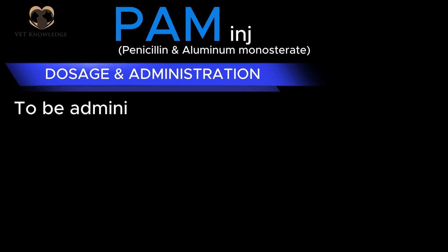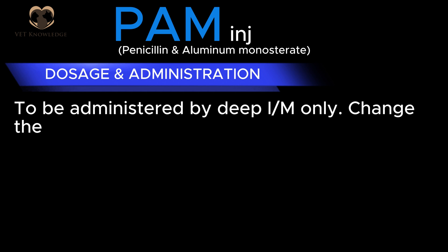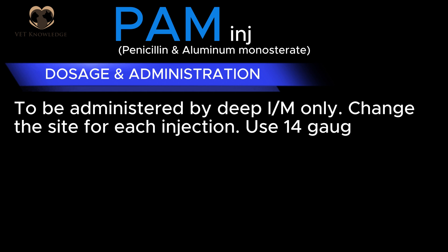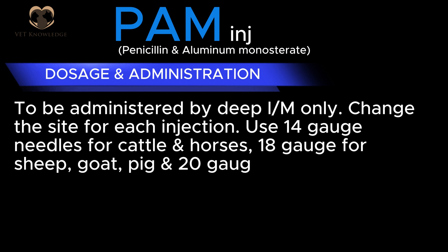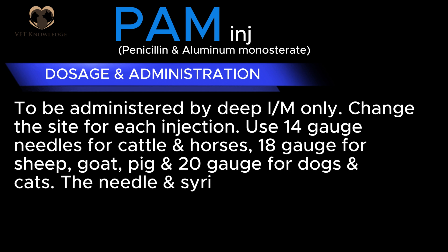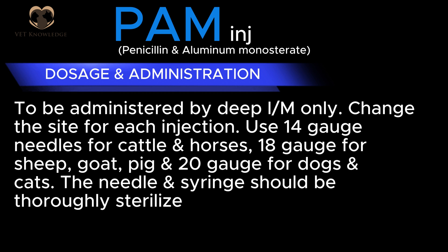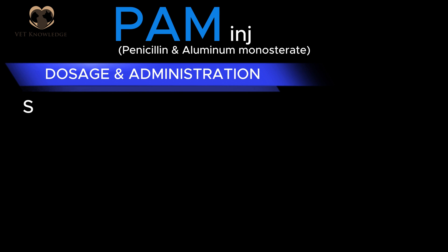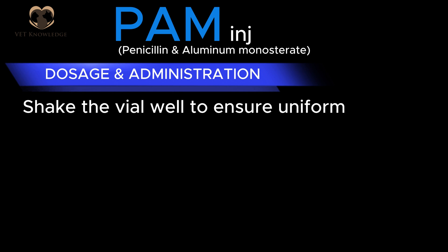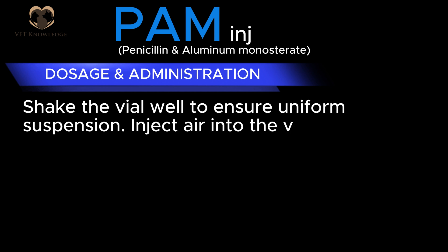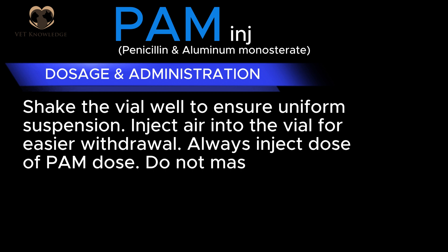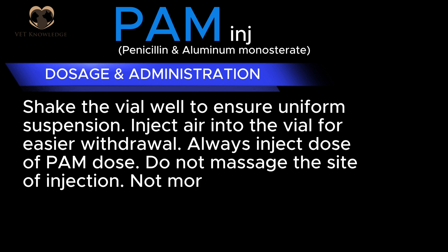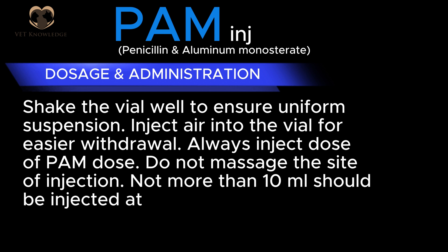PAM administration instructions: to be administered by deep IM route only. Change the injection site for each injection. Use 14-gauge needles for cattle and horses, 18-gauge for sheep, goat, and pig, and 20-gauge for dogs and cats. The needle and syringe should be thoroughly sterilized by boiling in water before use. Shake the vial well to ensure uniform suspension. Inject air into the vial for easier withdrawal. Always inject the full PAM dose. Do not massage the site of injection. Not more than 10 ml should be injected at one site.